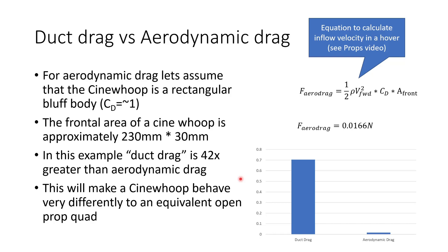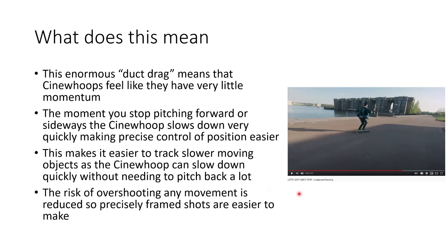This makes the CineWhoop behave really differently to an equivalent open-prop quad. CineWhoops feel like they have so little momentum — the moment you stop pitching forward or sideways, a ducted CineWhoop is going to slow down very, very quickly. This makes precise position control really easy because you can change the angle just a little bit and suddenly you're slowing down a lot or speeding up more. Tracking slower moving subjects becomes much, much easier. If you're following a subject and getting too close, you just pitch back a little bit and the duct drag slows you down immediately, avoiding overrunning the subject. Precisely framed shots are easier to capture, making proximity flying — what CineWhoops are really known for — much more achievable.